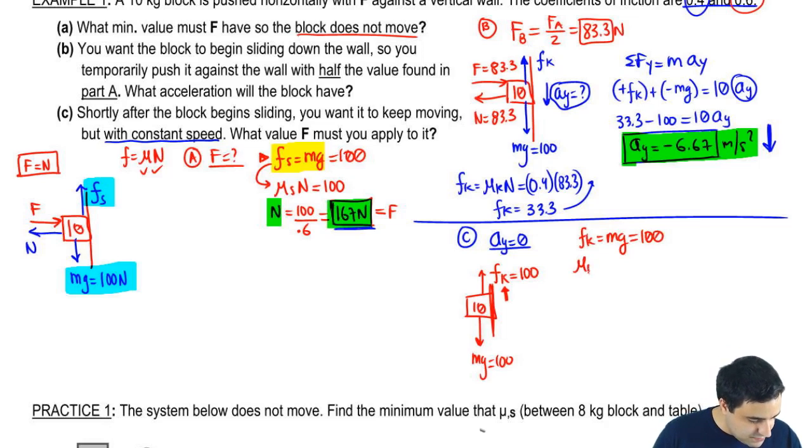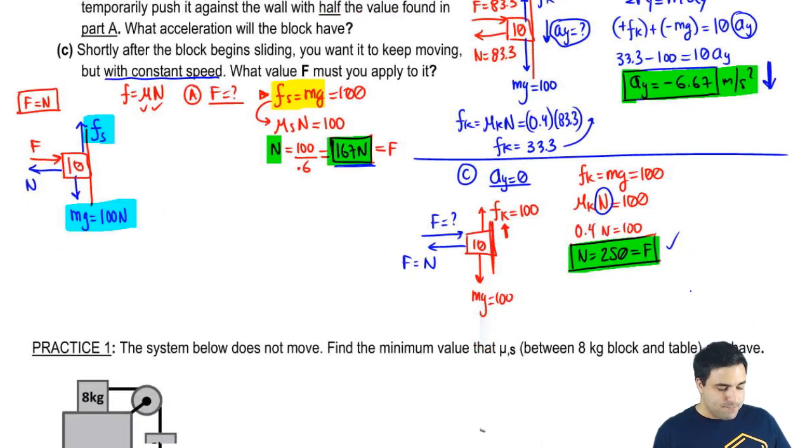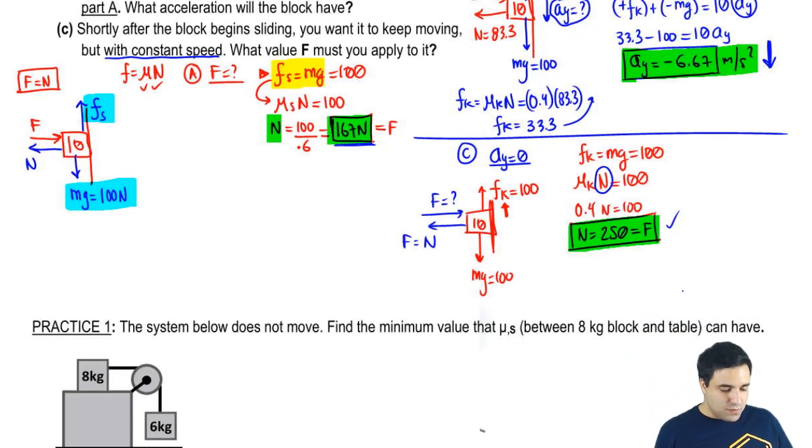F_k, friction kinetic is μ_kinetic normal equals 100. The question here is how much force must you apply? This is similar to part A. F and N have the same magnitude, action-reaction. So when I find N, what I'm really doing is finding F indirectly. μ_k is 0.4, normal is 100. So normal is 100 divided by 0.4. Normal is 250. That means that that is your F as well. So it takes a force of 250 to keep this thing from accelerating, but it's still going to fall at a constant rate. If you push any harder, your friction would be bigger than your mg and this thing would start stopping, would start slowing down. And that's not what we want.